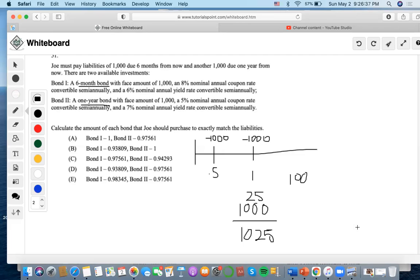We're going to do $1,000 divided by $1,025, which equals 0.9756. This means we only need 0.9756 units of bond two to completely finance the liability at year one.